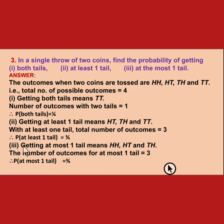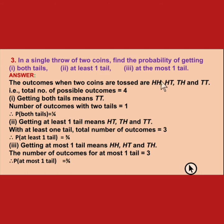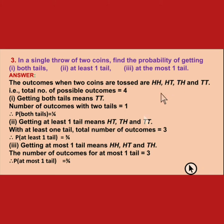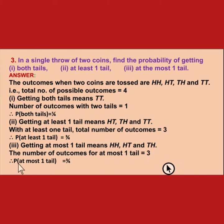Next, getting at most 1 tail means 1 tail or less than 1 tail. Less than 1 tail means no tail. So head-head has no tail, head-tail has 1 tail, and tail-head has 1 tail. These are the favorable outcomes for at most 1 tail, giving a total of 3. So the probability of at most 1 tail is 3 upon 4.